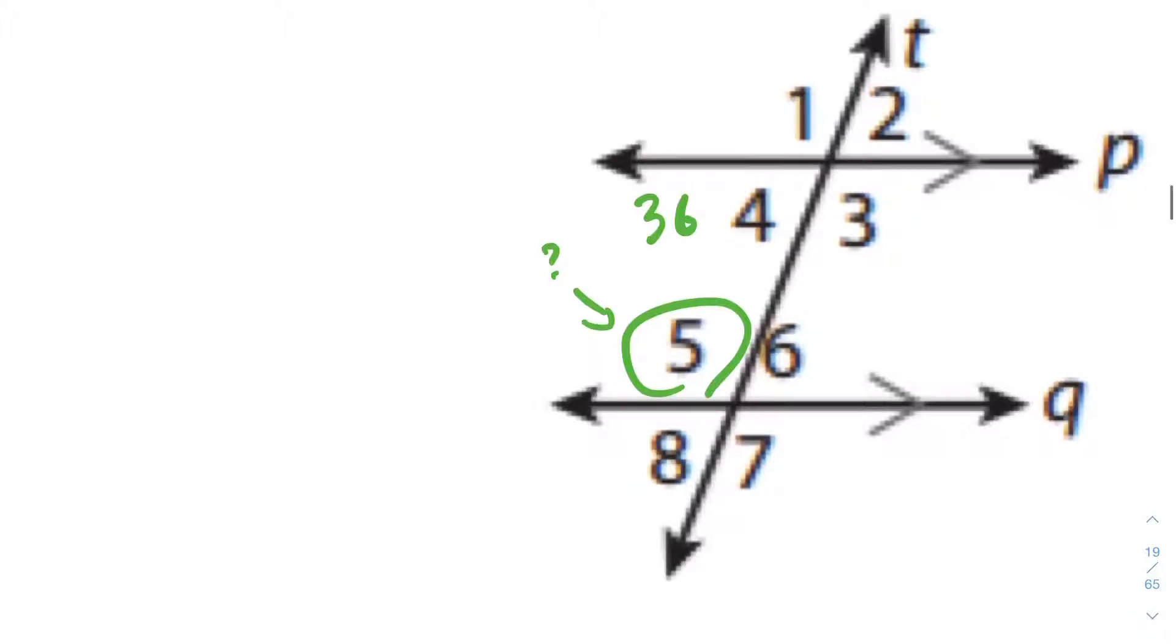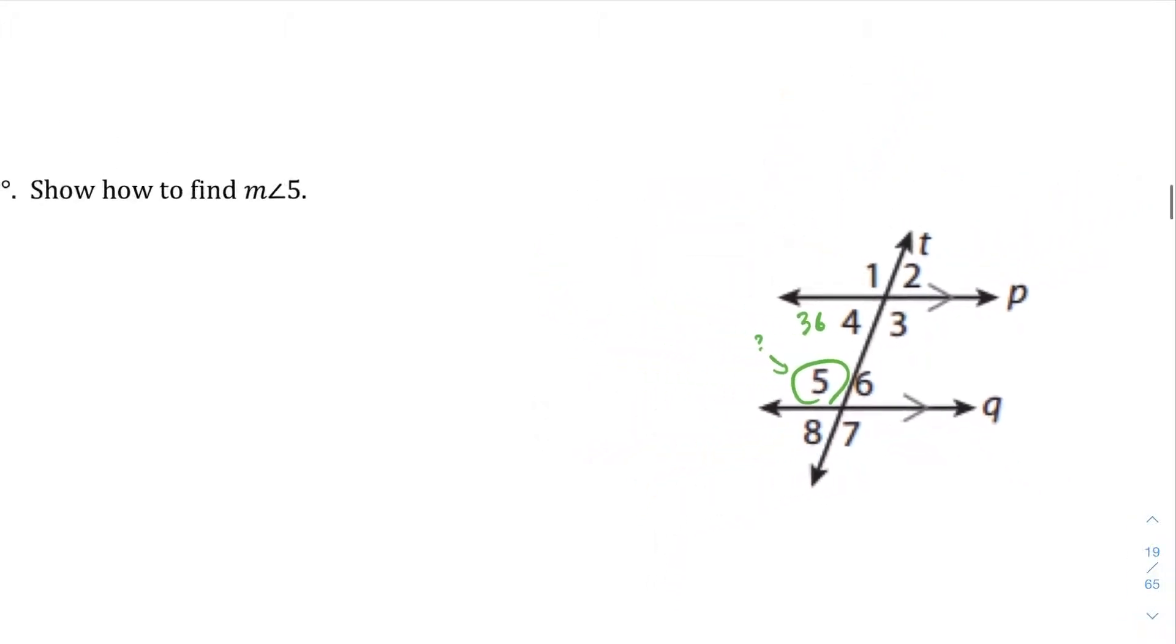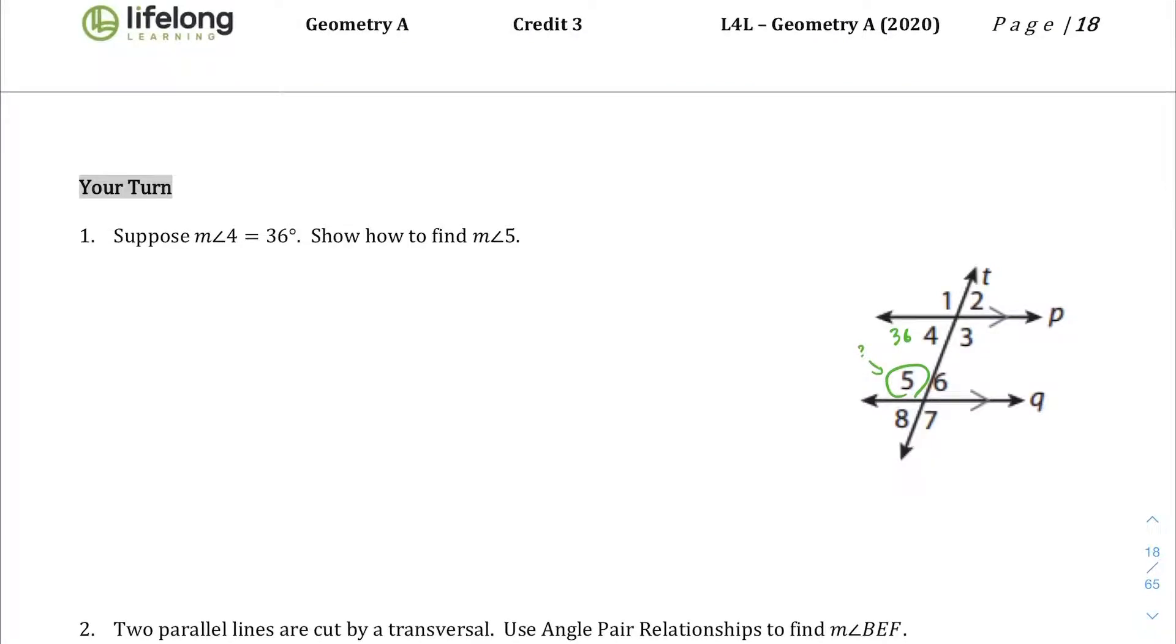We want to know what 5 is. Well, 4 and 5 are same side interior angles. And so what we know about same side interior angles is that if you add angle 4 plus angle 5, you will get 180 degrees. They are supplementary because of the same side interior angles postulate.